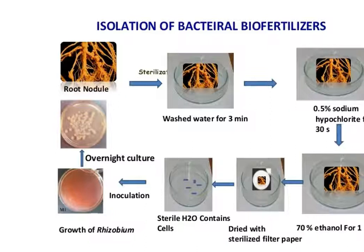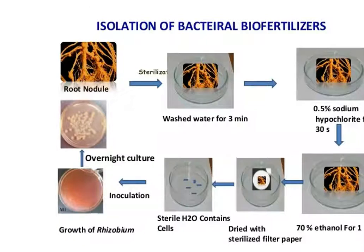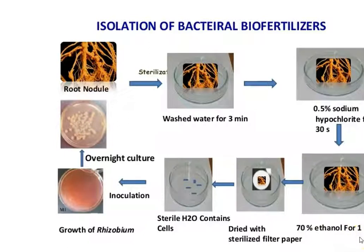The isolation steps are as follows: the root nodule is taken and washed with water for 3 minutes. As per the older protocol, 0.5% sodium hypochlorite is used, followed by surface sterilization with 70% ethanol for 1 minute. Alternatively, you can adopt 70% ethanol-based sterilization for 2 subsequent times.